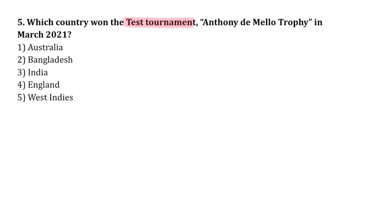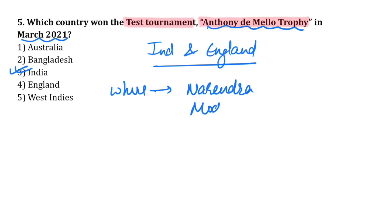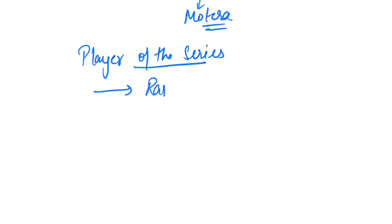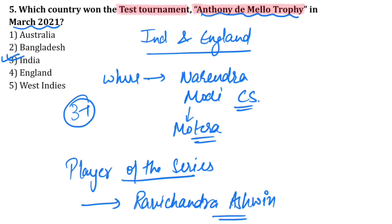Which country won the test tournament Anthony de Mello Trophy in March 2021? The match was held between India and England, and it was won by India with a score of 3-1. It took place at the Narendra Modi Cricket Stadium, which was earlier known as Motera Stadium — the largest cricket stadium. The player of the series was Ravi Chandra Ashwin.